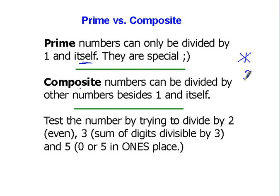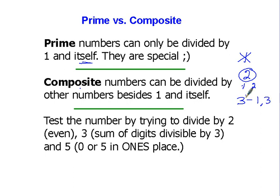How about the number two? Two can be divided by one and by two — that's one and itself — so this is a prime number. How about three? You can only divide three by one and three, so it's also a prime number. How about four? You can divide four by one and four, but also by two, so four is a composite number.